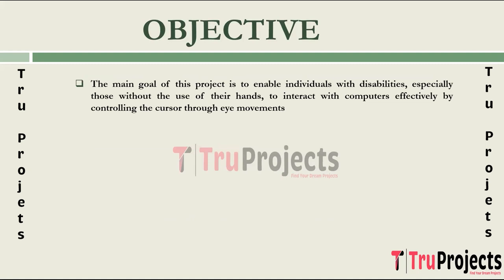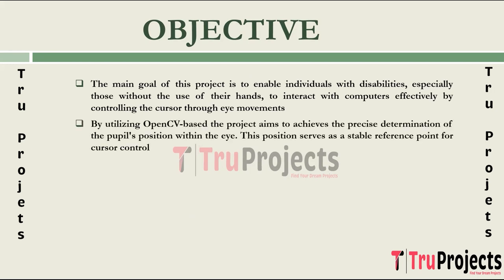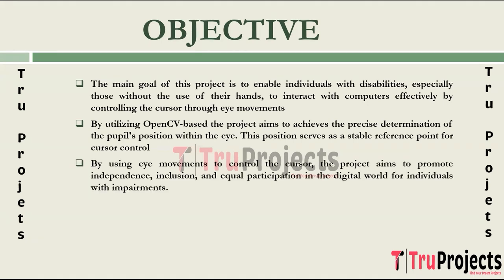Objective of the project. The project's primary objective is to empower individuals with disabilities, particularly those with limited hand mobility, to effectively interact with computers by controlling the cursor through eye movements. Utilizing OpenCV-based algorithms, the project aims to achieve precise and stable pupil position detection within the eye, facilitating accurate cursor control. Through eye-based cursor control, the project strives to enhance the independence, inclusion, and equitable participation of individuals with impairments in the digital world.